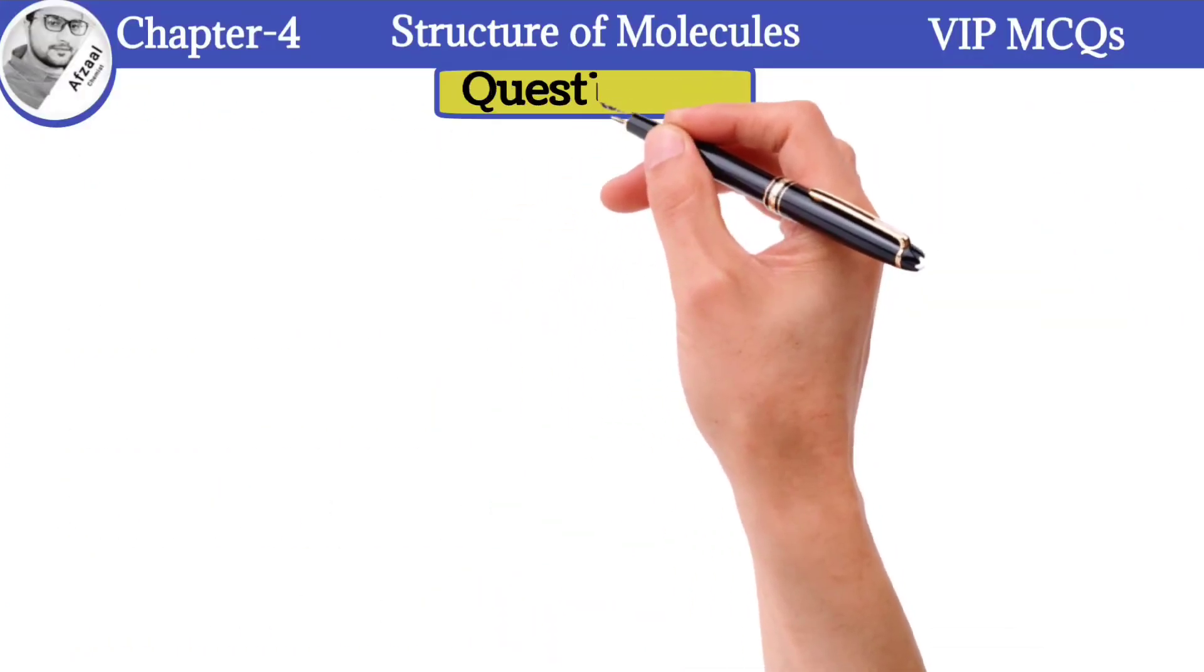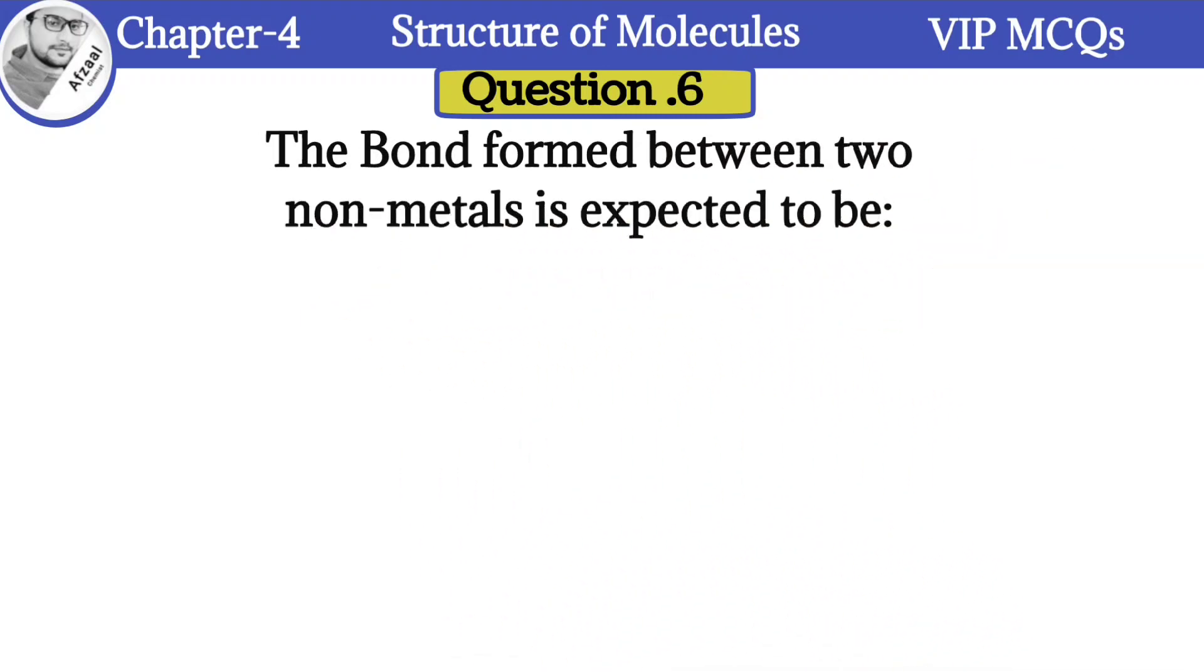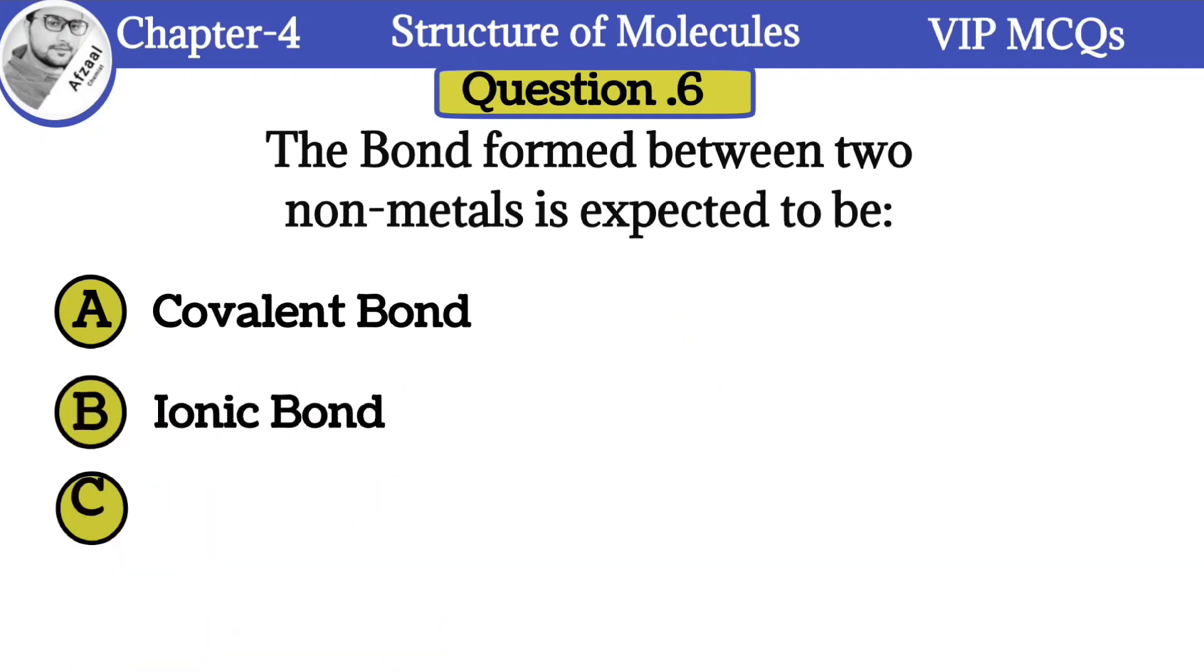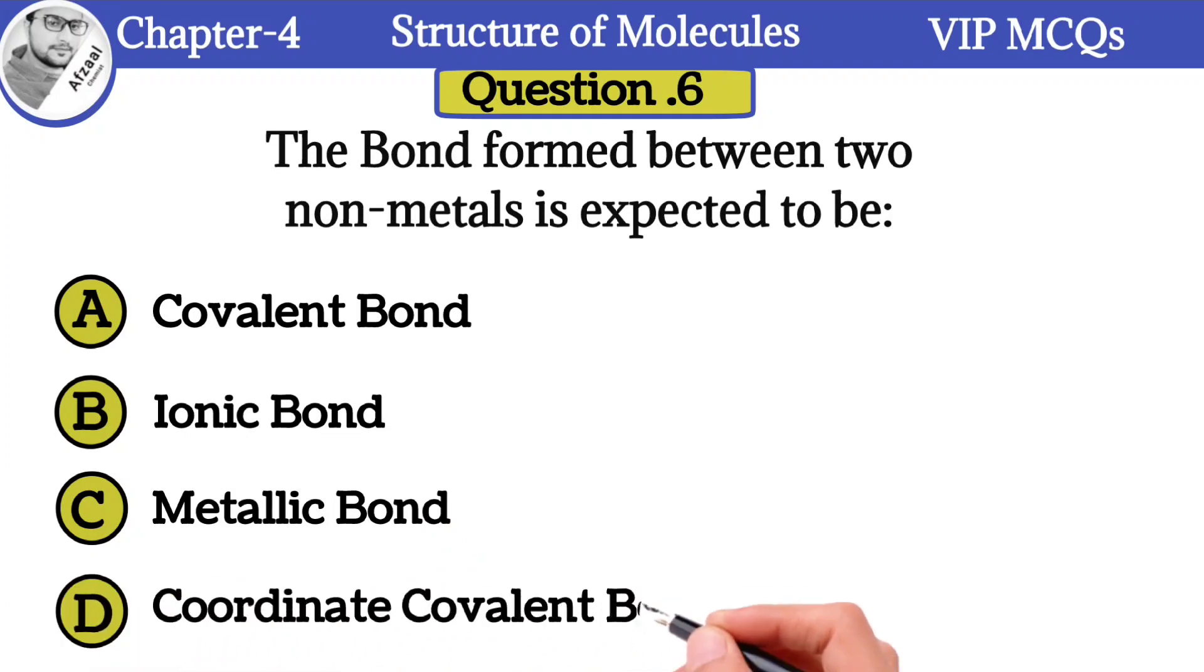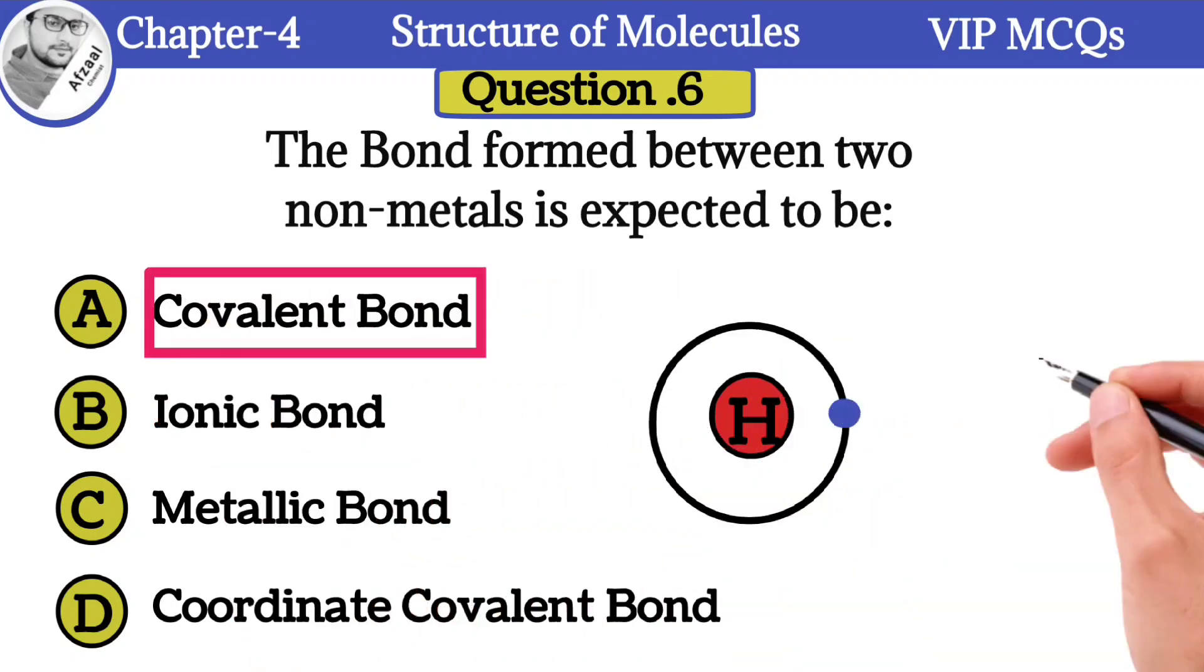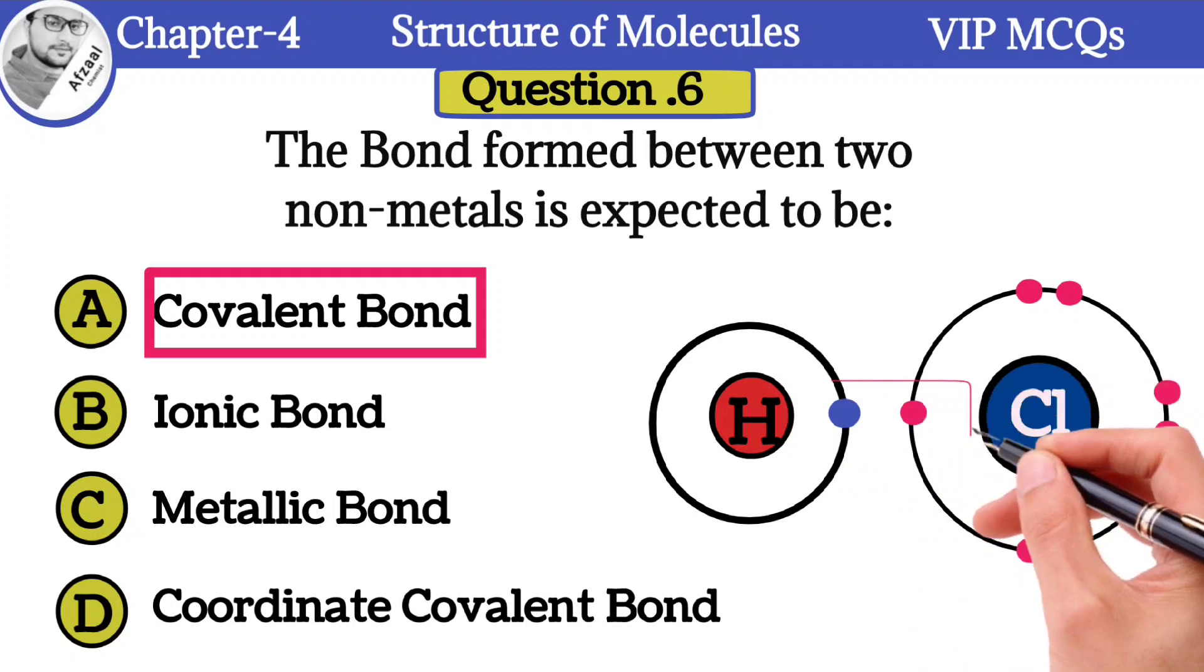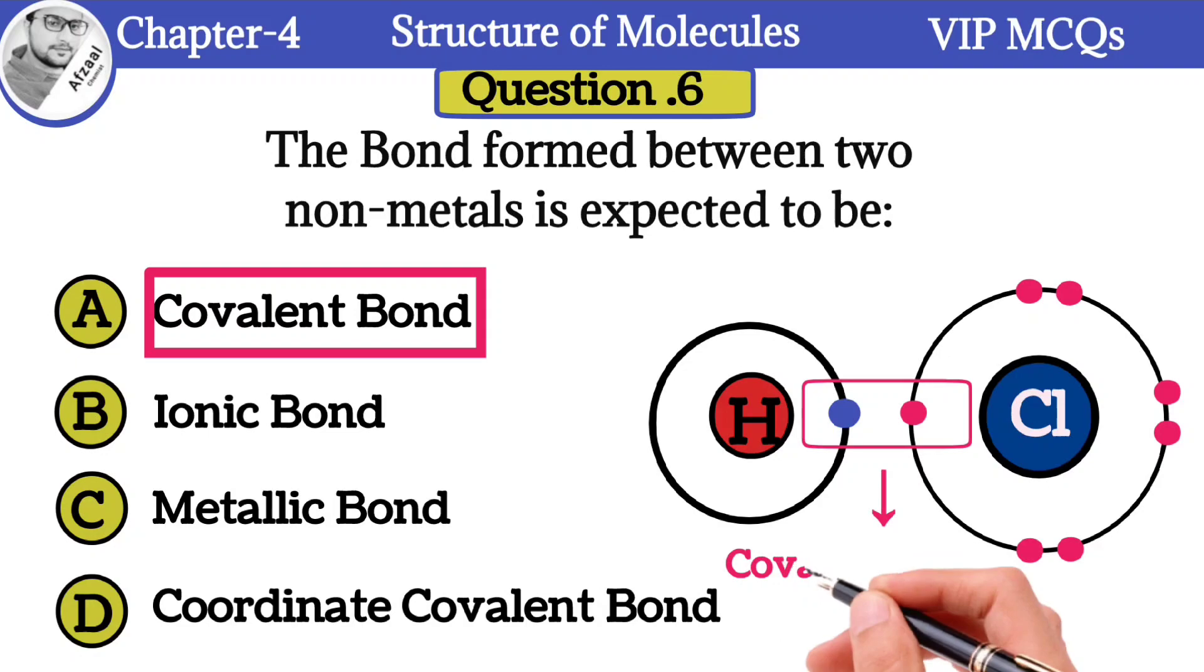Question number 6: The bond formed between two nonmetals is expected to be: A) Covalent bond, B) Ionic bond, C) Metallic bond, D) Coordinate covalent bond. The correct option is covalent bond. For example, hydrogen contains one electron in its shell, and chlorine containing seven electrons in its valence shell. Both atoms are nonmetals. Each atom shares one electron, and the bond formed due to mutual sharing of electrons is known as covalent bond.